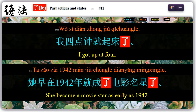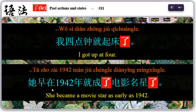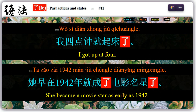Eleven: placed after a verb together with an adverb of past time, 了 can describe past action or state. For example, 我四点钟就起床了 — 就起床了, got up. 她早在一九四二年就成了电影明星了 — 成了电影明星, became a movie star; 早在一九四二年, as early as 1942.